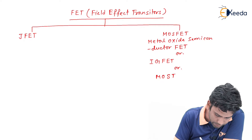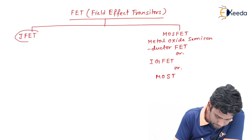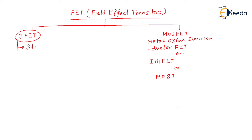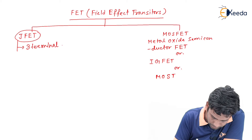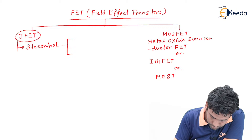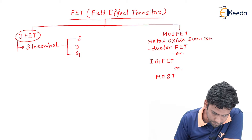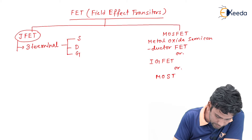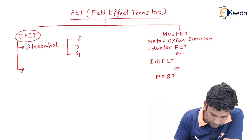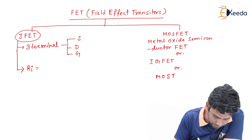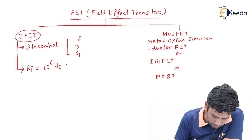We know that JFET is a three terminal device and the terminals are source, drain, and gate. The input resistance of this JFET is high, of the order of 10 to the power 6 to 10 to the power 8 ohm.